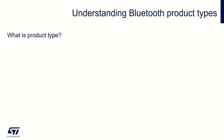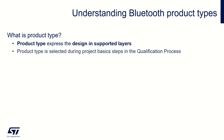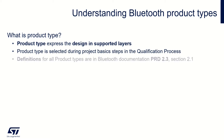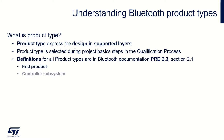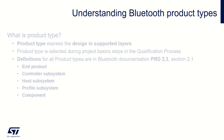The product type expresses the layers which are supported by the design. Product type is selected during project basic steps in the qualification process in Launch Studio. Definitions for the following product types are stated in the Qualification Program Reference Document, PRD 2.3, section 2.1. These can be divided into end product, controller subsystem, host subsystem, profile subsystem, and component.